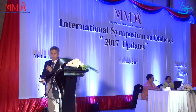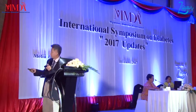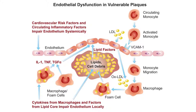This scheme illustrates atherogenesis: monocyte activation, monocyte migration — endothelial dysfunction is the initial step.